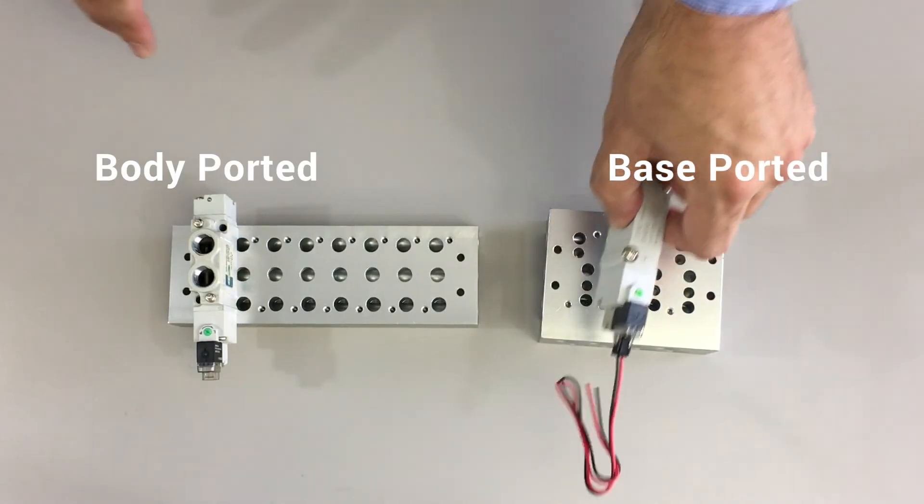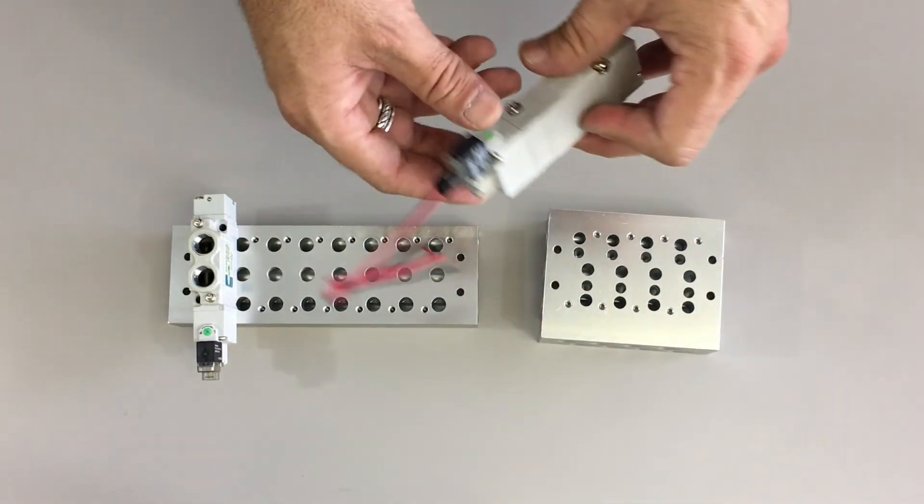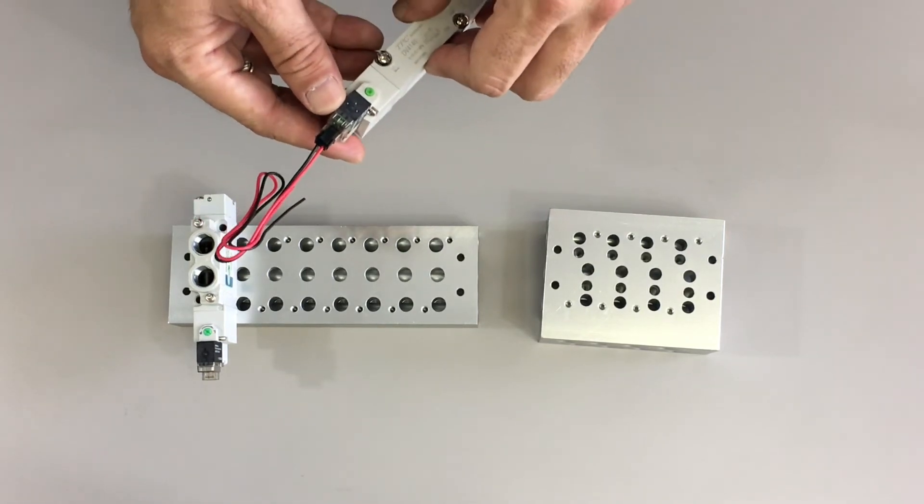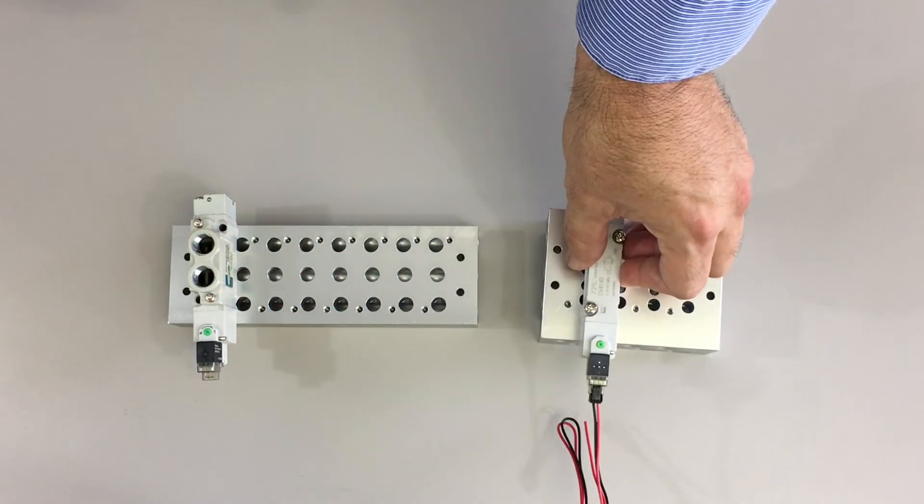It can be ordered in five configurations: single solenoid, double solenoid, closed center, exhaust center, and pressure center.